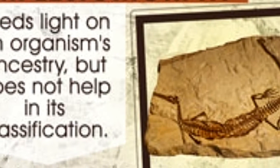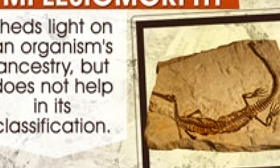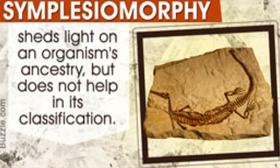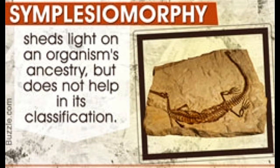Did you know? The term symplesiomorphy was first used in the year 1950 by a German biologist named Willy Hennig.